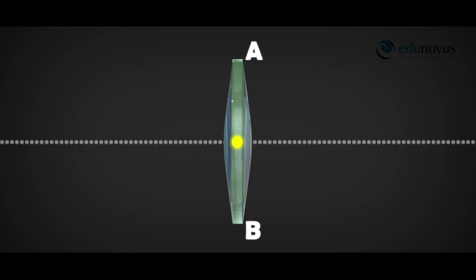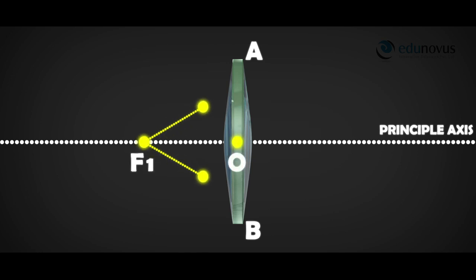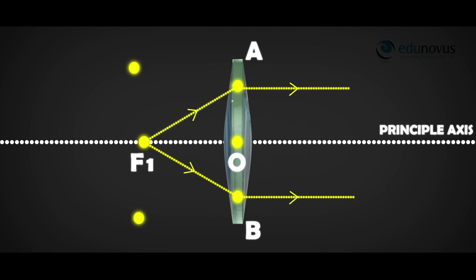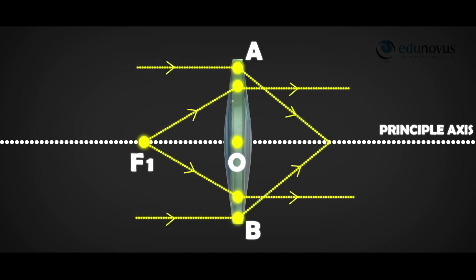The first principal focus is a point on the principal axis of the lens where, when a ray diverges from it, after refracting from the lens it goes parallel to the principal axis — here F1 is the first principal focus. The second principal focus is a point on the principal axis where an incident ray parallel to the principal axis, after refraction from the lens, meets at this point — here F2 is the second principal focus.